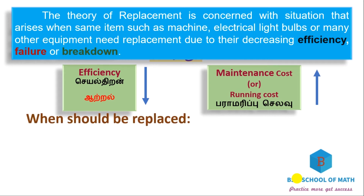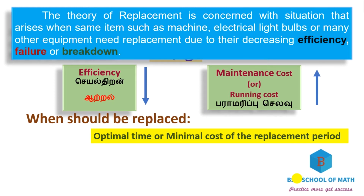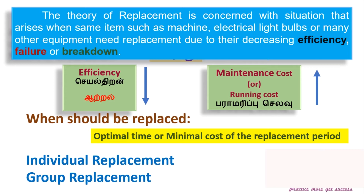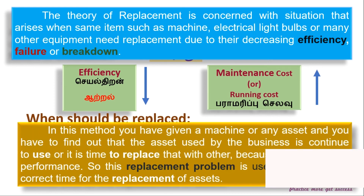So when should an item be replaced? We need to find the optimum time or minimal cost replacement period — that is, which period is best for doing the replacement. There are two group replacement policies in this method.